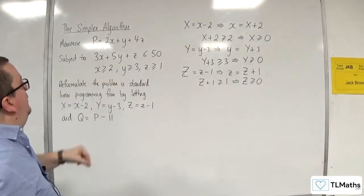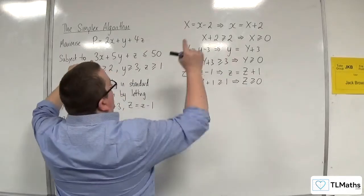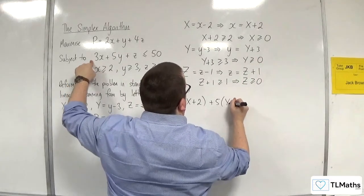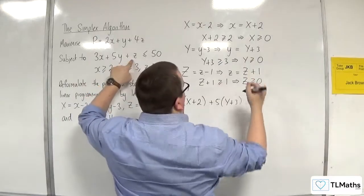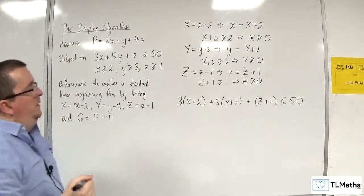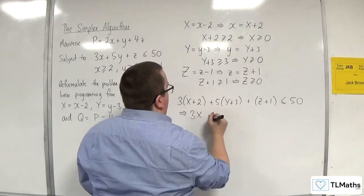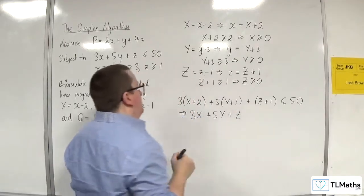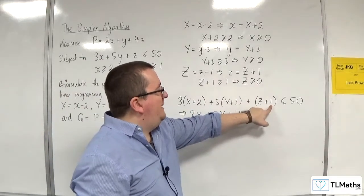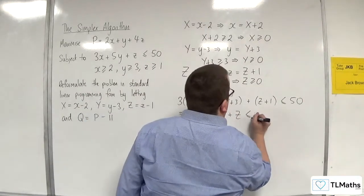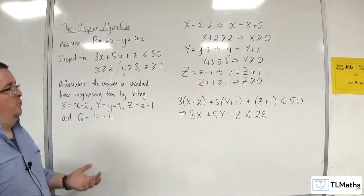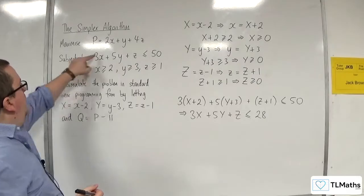For the constraint 3x + 5y + z ≤ 50, we replace the lowercase variables: 3(X+2) + 5(Y+3) + (Z+1) ≤ 50. Expanding: 3X + 5Y + Z plus 6 + 15 + 1 = 22. Subtracting 22 from both sides gives 3X + 5Y + Z ≤ 28.